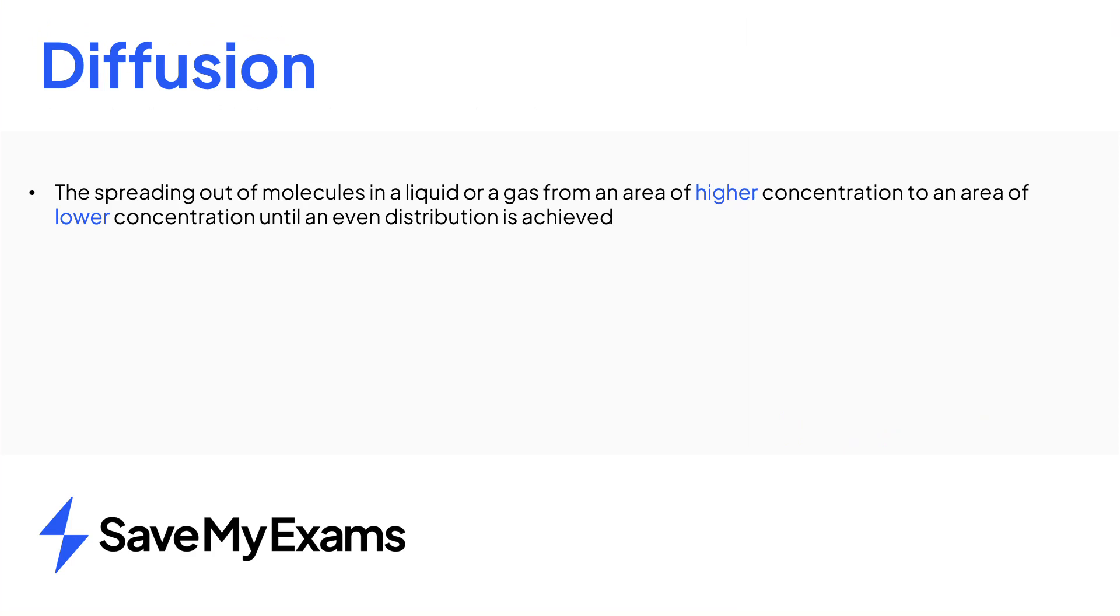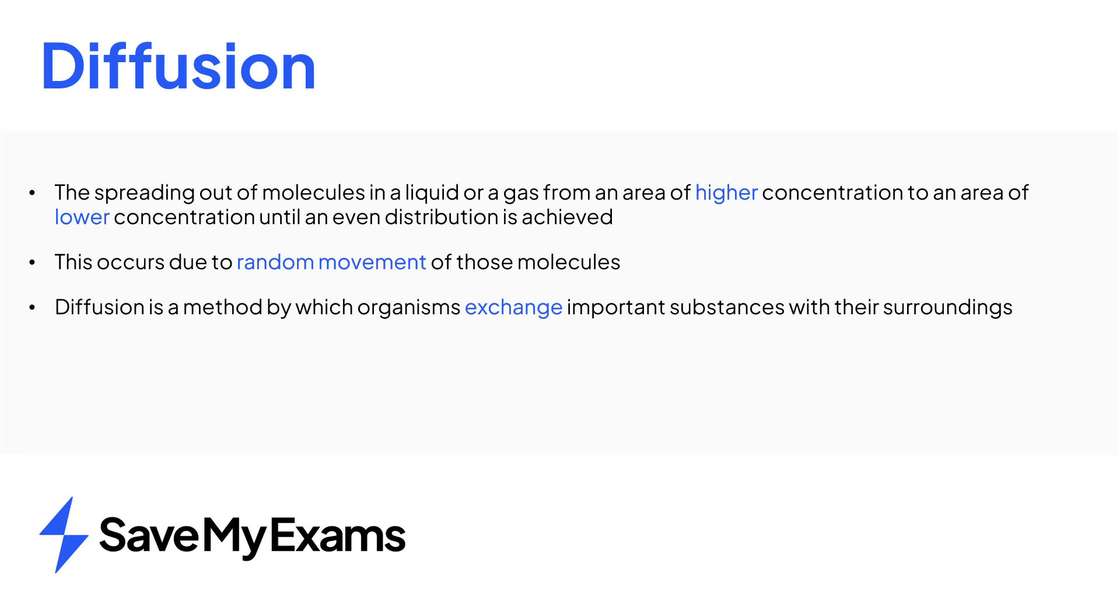In summary, diffusion is the spreading out of molecules in a solution or gas from an area of high concentration to an area of low concentration until distribution of molecules is even. Diffusion occurs due to the random movement of molecules. Diffusion is a method by which organisms exchange substances with their surroundings.